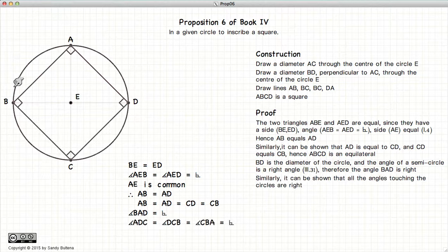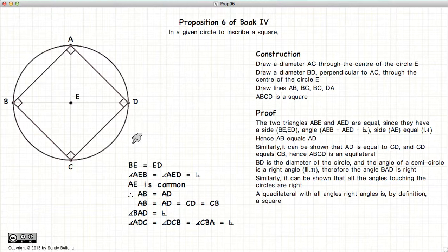Similarly, we can show that all of these angles at A, B, C, and D are right angles. So we have a quadrilateral with equal sides, where every angle is a right angle, which by definition is a square.